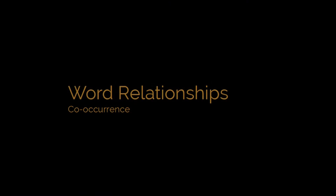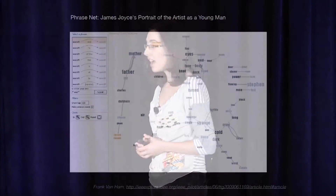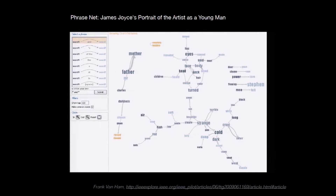The next thing I want to talk about is the relationships of words. So far I've been looking at individual words or the structure as a whole, but obviously words have relationships to each other. The best way to look at that is with co-occurrence, using a visualization technique called the phrase net—a phrase network—which was part of a project called Many Eyes. The way it works: you specify a pattern with one word, a connector word, and then a second word.